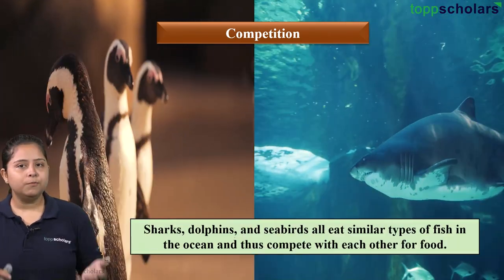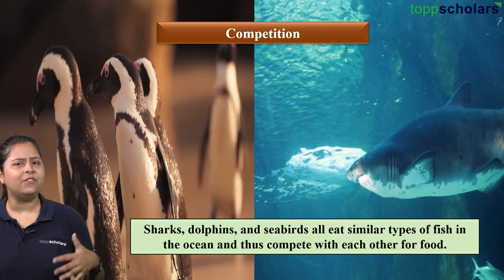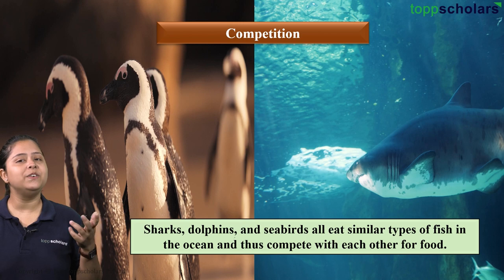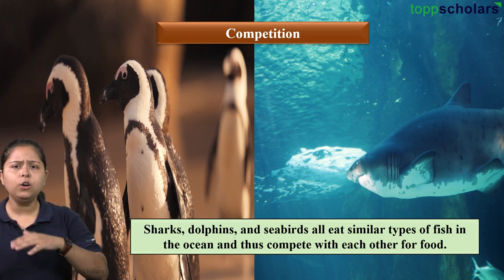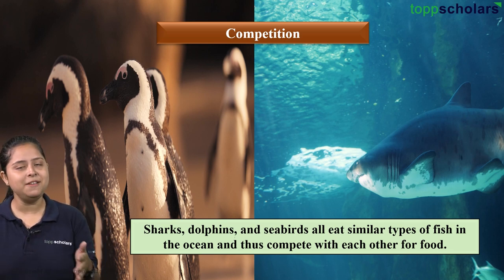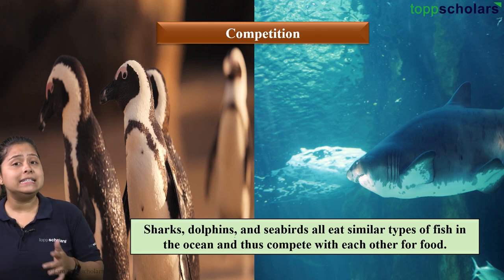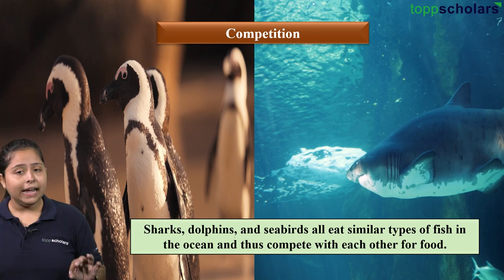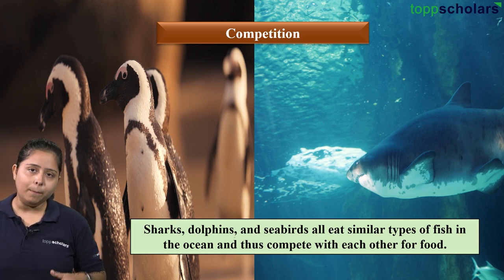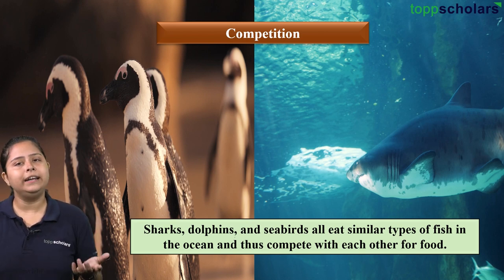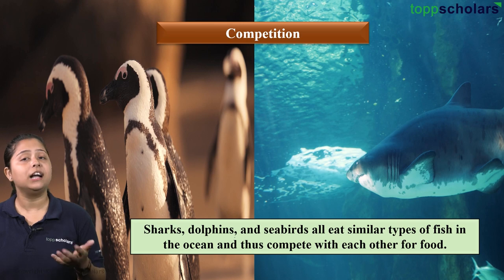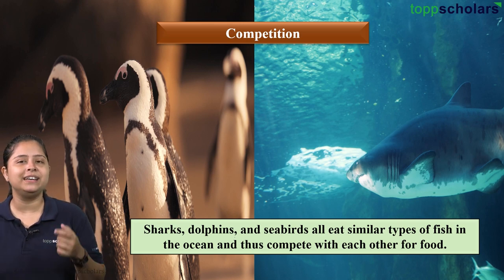Here we have penguins and fishes. Penguins eat small fishes, and large fishes also depend on small fishes for food, so both compete — the interaction is competition. Sharks, dolphins, and seabirds like penguins all eat similar types of fishes in the ocean, competing to meet their food requirements. Competition can be for food, shelter, water, or other resources. The key is how organisms are affected and which signs represent this.